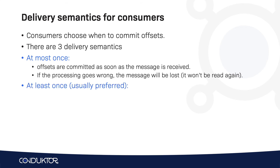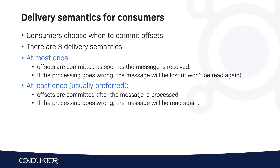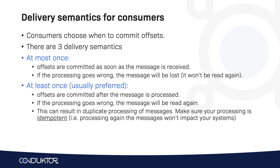At least once is usually the preferred method. Here you commit offsets after a message has been processed, but if the consumer crashes or restarts the message will be read again — creating a chance for duplicate processing. To avoid the effects of this, you need to make sure your processing is idempotent, meaning processing the same message twice has no additional effect beyond the first time.